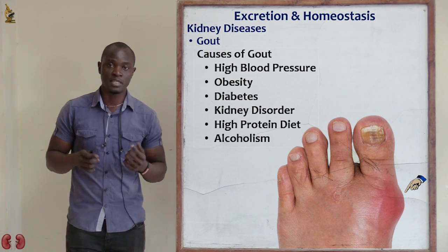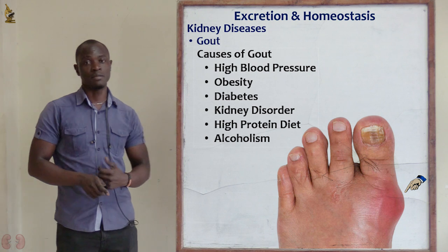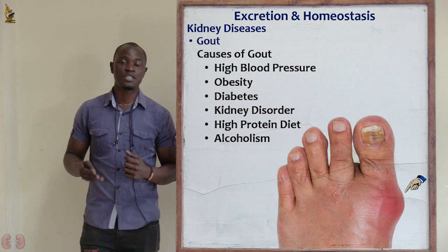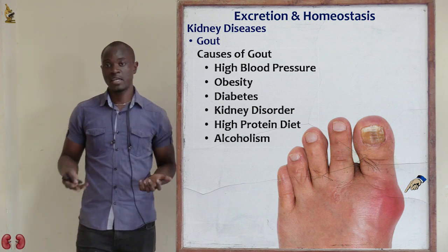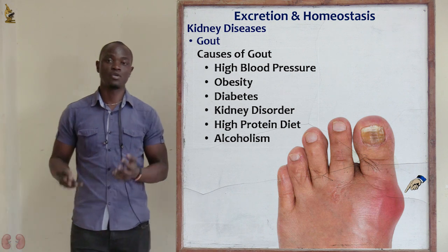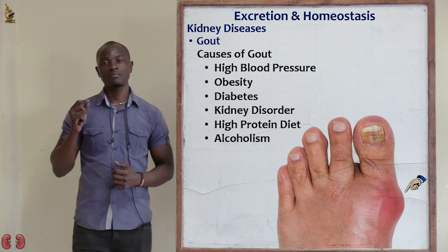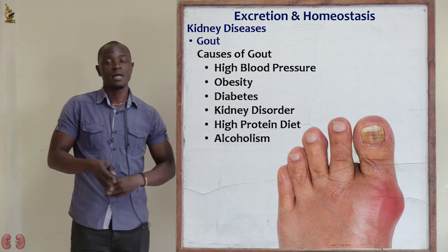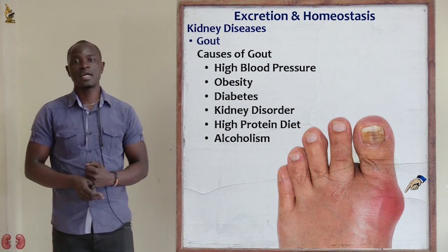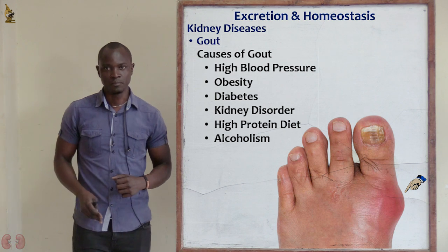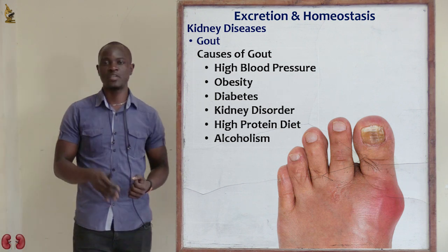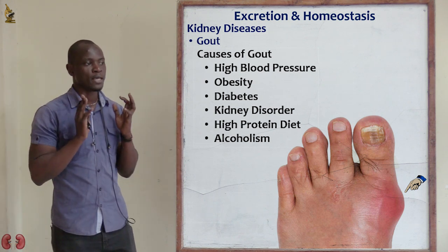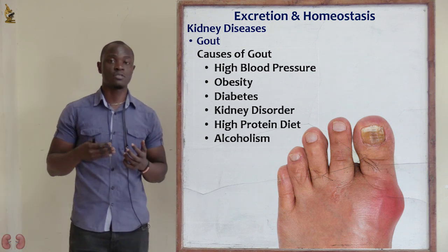Apart from kidney problems, drinking alcohol also puts people at very high risk of getting gout, whether you are old or young. Eating food high in protein is another cause — if you are someone who likes eating a lot of meat every day, eating eggs every day, you are risking getting this disorder referred to as gout.